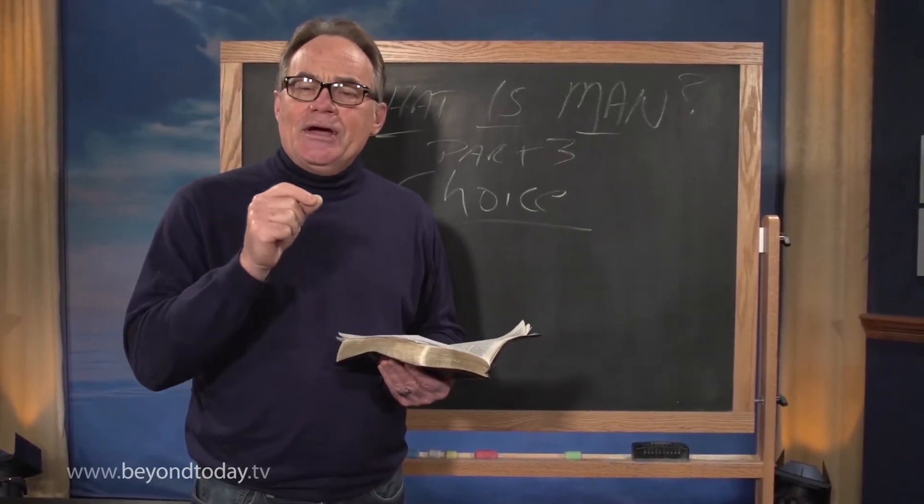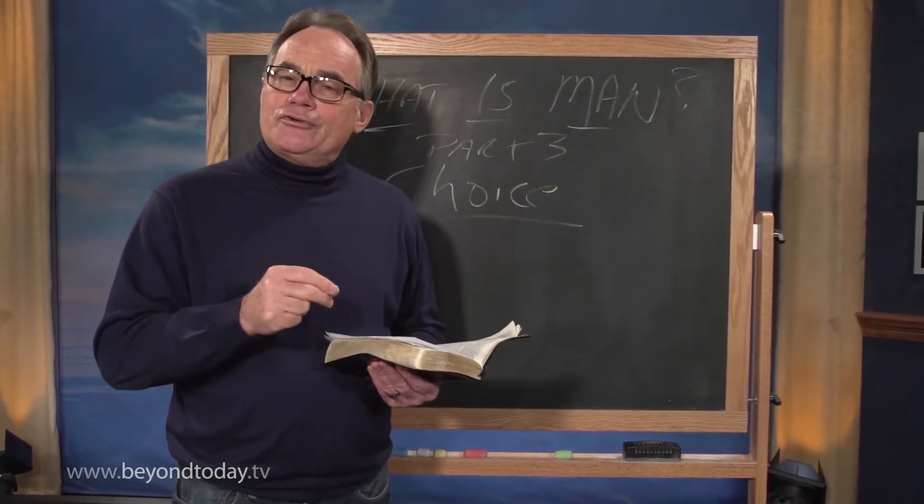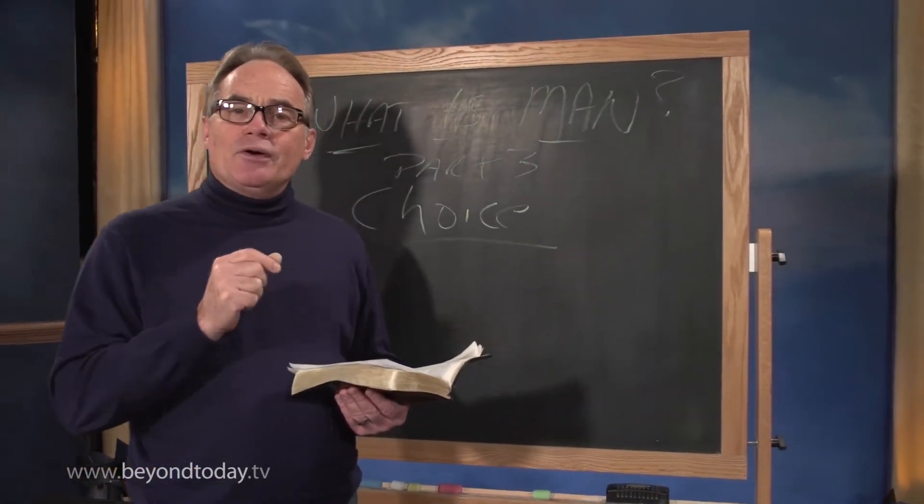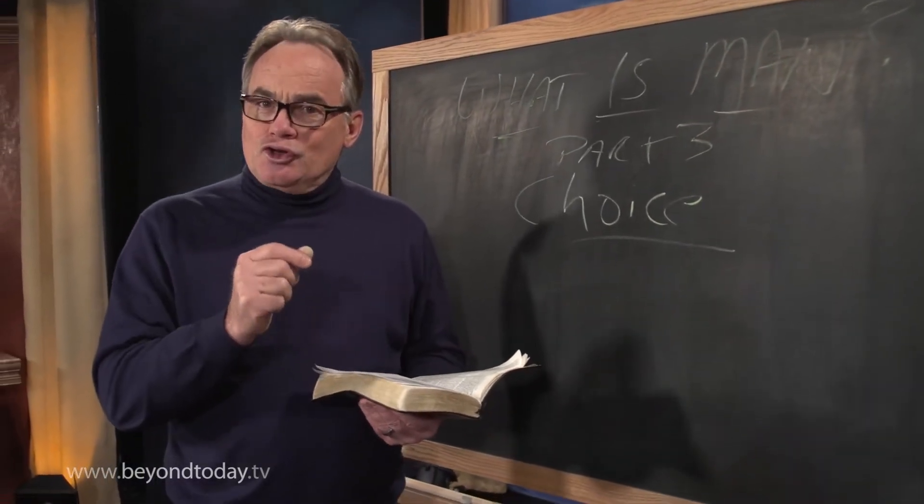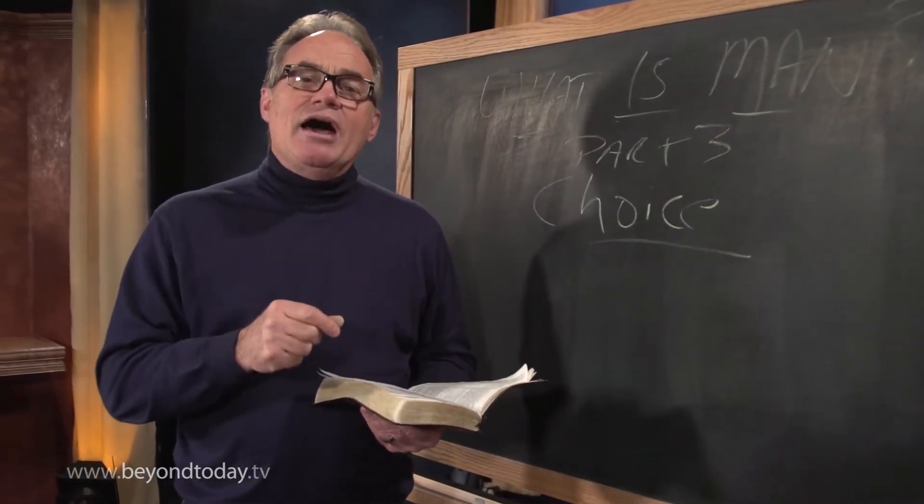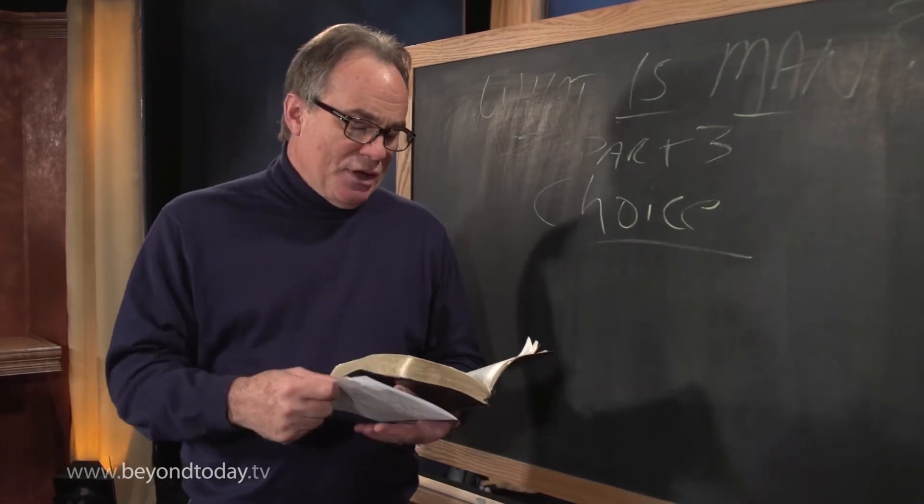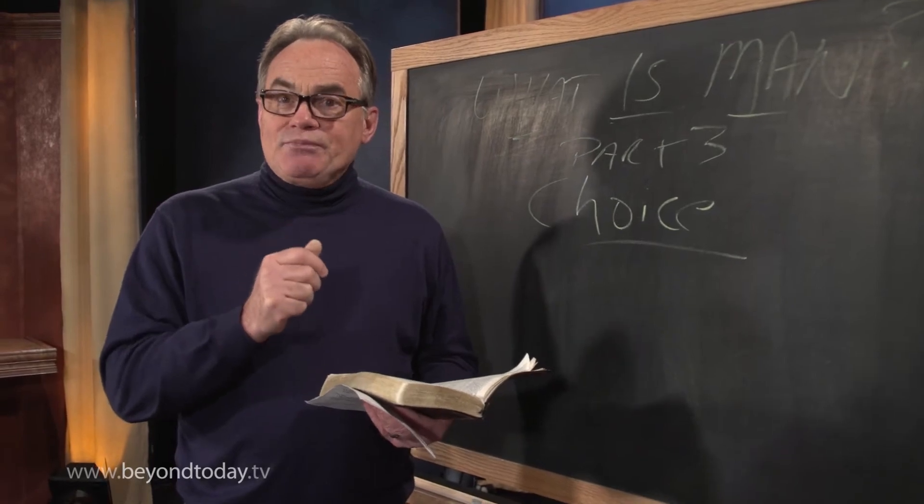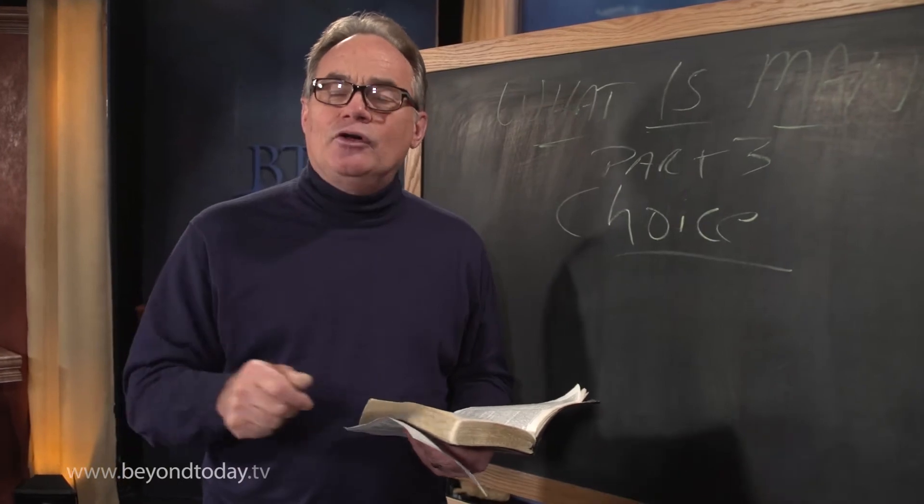And in that choice, God said to the first man and woman that of all the trees of the garden they might eat except of the tree of the knowledge of good and evil, leaving open to them the choice to take of the tree of life. And when that moment came, as the account tells us in Genesis 3, the first humans Adam and Eve chose to take from the tree of the knowledge of good and evil.